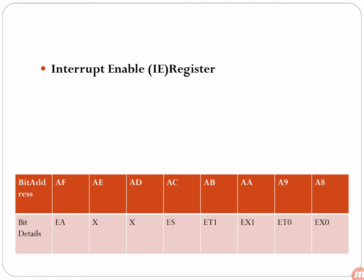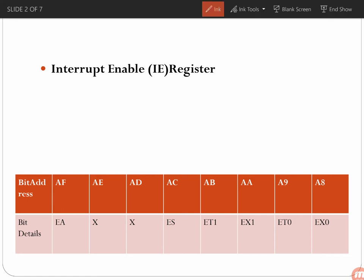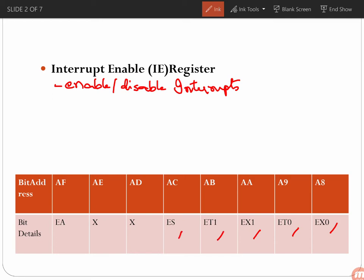The Interrupt Enable register, as the name says, is used to enable or disable interrupts. The 8051 has five interrupts: External Interrupt 0 (INT0), Timer 0, External Interrupt 1 (INT1), Timer 1, and the Serial Port interrupt. These five interrupts can be enabled or disabled using the Interrupt Enable register.